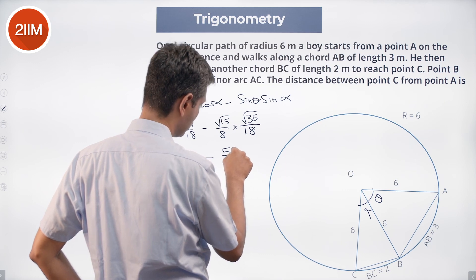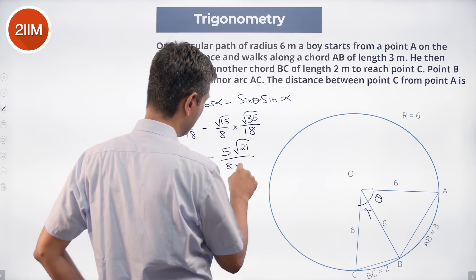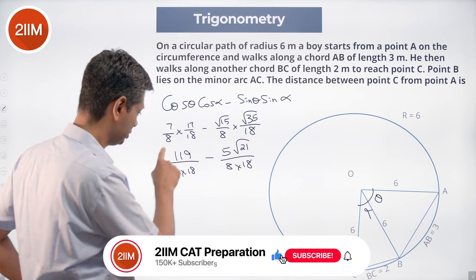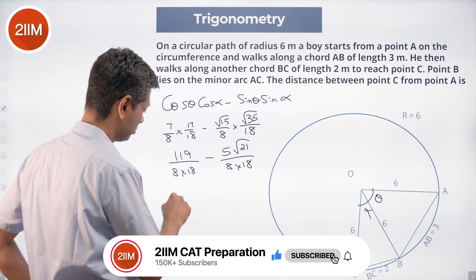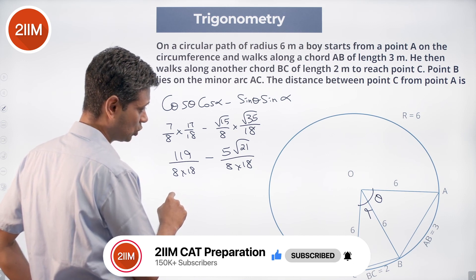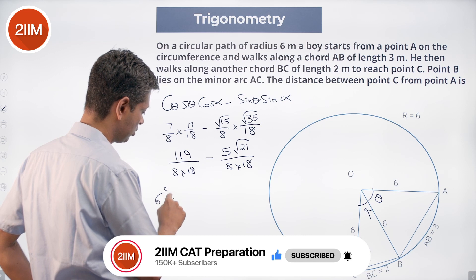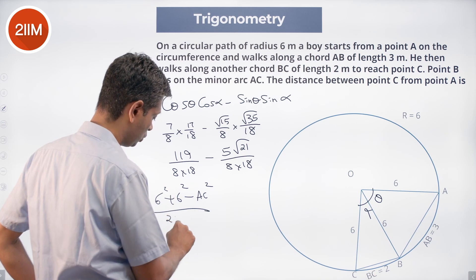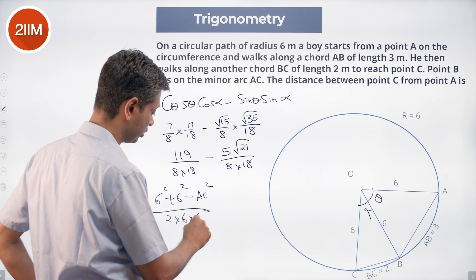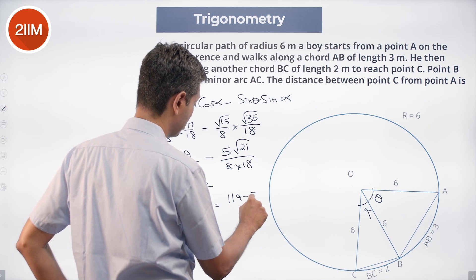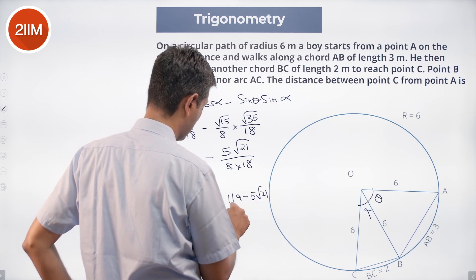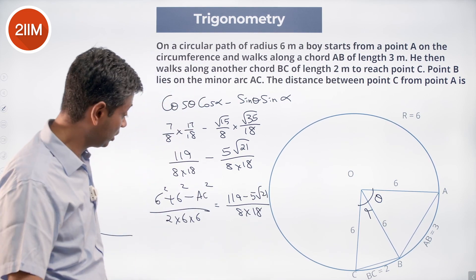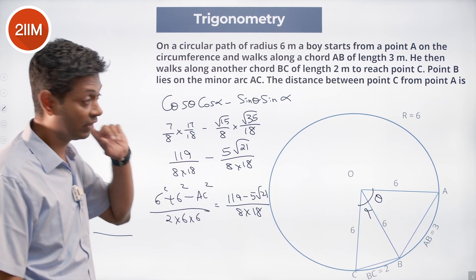This simplifies to 119/144 minus 5√21/144, giving cos(θ + α) = (119 − 5√21)/144. This equals cos of angle AOC, which by the cosine rule is 6² + 6² − AC² divided by 2 × 6 × 6. So (72 − AC²)/72 = (119 − 5√21)/144.